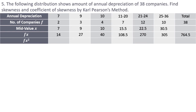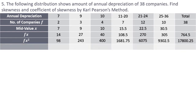To find fx², multiply fx with the mid value. So 14×7=98, 27×9=243, 40×10=400, and likewise for all remaining values. Once I have all the values, I add them up to get 17,800.25.